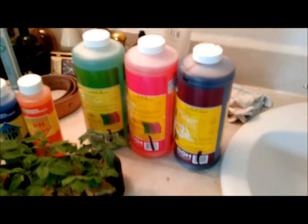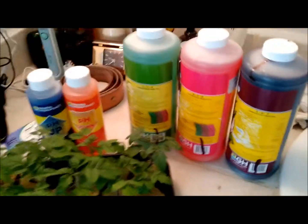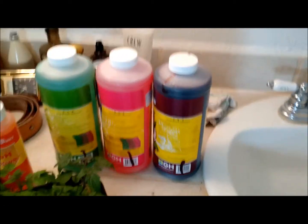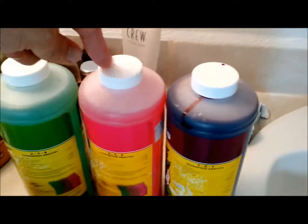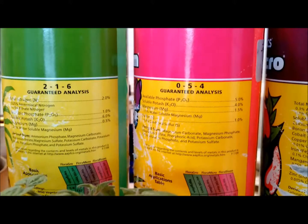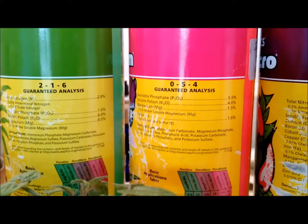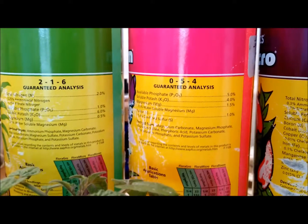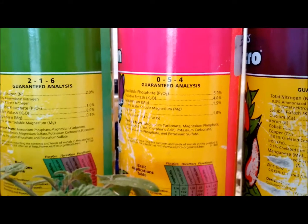Next thing is the nutrient solution. There are two important things for nutrients. You can see I've got three different kinds of nutrients right here. Each one of these has actually got a different NPK level. So that says three numbers at the tops. That stands for nitrogen, potassium, and potash.